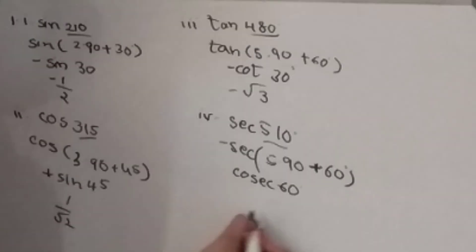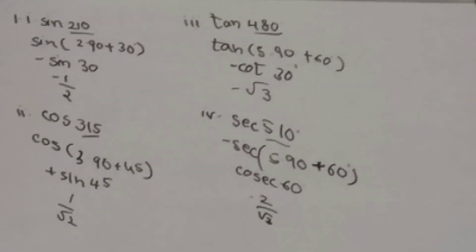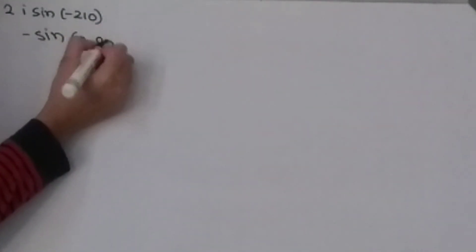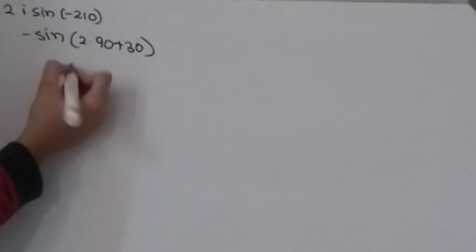Next, the second question. It is sin(−210°). If the minus sign goes in, then it will become minus sin. Then 2×90° + 30°, which will become minus sin(30°), giving minus 1/2.